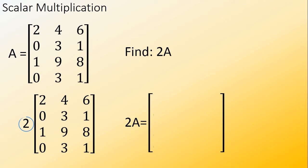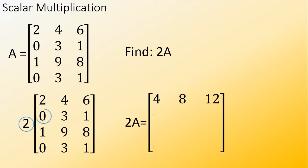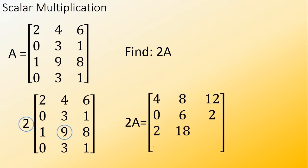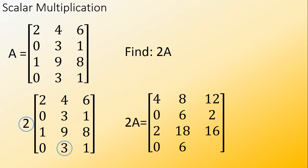2 times 2 equals 4, 2 times 4 equals 8, 2 times 6 equals 12, 2 times 0 equals 0, 2 times 3 equals 6, 2 times 1 equals 2, 2 times 1 equals 2, 2 times 9 equals 18, 2 times 8 equals 16, 2 times 0 equals 0, 2 times 3 equals 6, 2 times 1 equals 2.